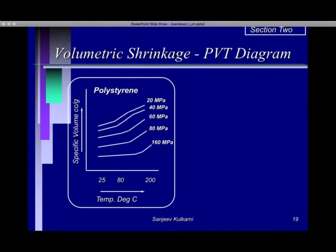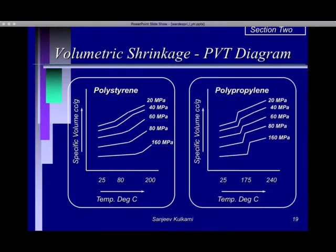Let us understand the PVT diagram of typical materials — polystyrene and polypropylene, two commonly used materials. On the y-axis we have specific volume (inverse of density, in cc per gram) and on the x-axis we have temperature. For polystyrene, as we increase the temperature the volume increases and continues to increase through melting. You can see different curves for different pressure levels — from 20 to 40, 60, 80, and 160 megapascals. Polypropylene is more crystalline in nature and hence has a sharp, specific melting region, which is why those graphs show a distinct jump.